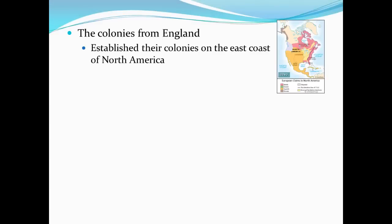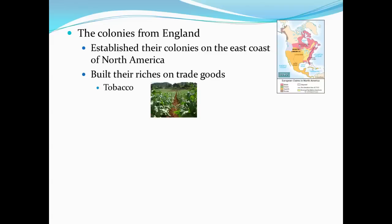The British colonists established their colonies on the east coast of North America. They built their riches on trade goods. Although they successfully searched for and found gold and silver, their real treasure came with the introduction of tobacco to the European market. The natural resources found in North America and the ability to grow crops like tobacco and sugar cane helped the British colonies become a true source of riches for the British Empire.